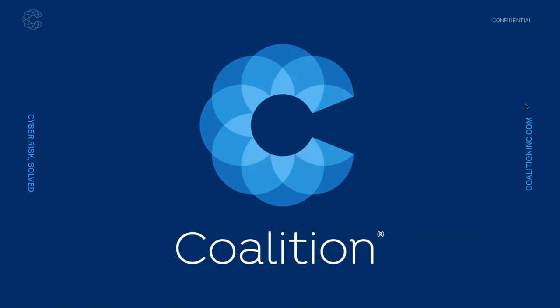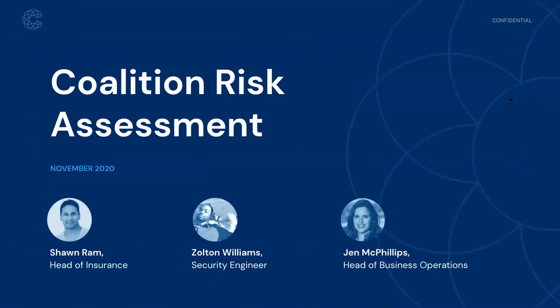Good morning, everybody. We're going to go ahead and get started. First off, thank you so much for joining us today. As a reminder, this is Coalition's monthly security webinar series. We're excited to be joined by a broad group of our policyholder customers as well as some broker partners this morning. Today we're going to be talking about our new Coalition Risk Assessment. I'm really excited to share this document as this is the culmination of all the data and information we use to underwrite and protect our policyholders. It's been packaged up in a document that you and your organization can use to understand your own security posture, as well as implement recommendations to make yourself more secure.